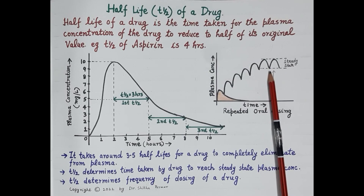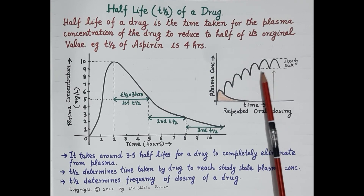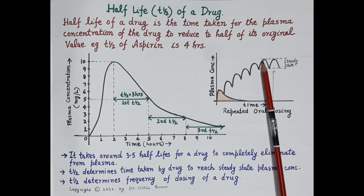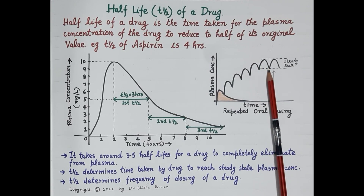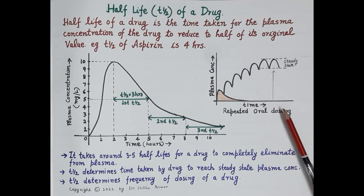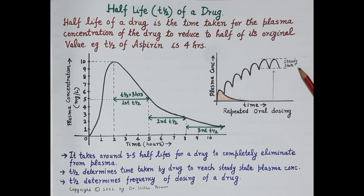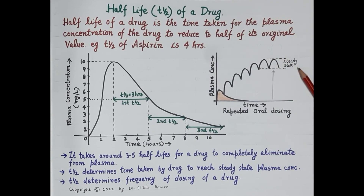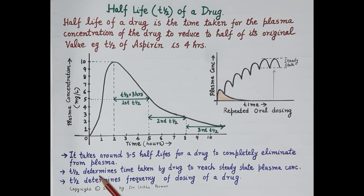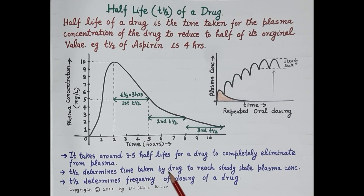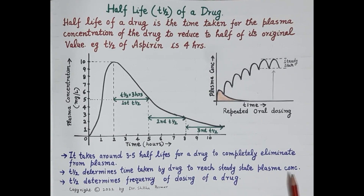Once this balance is made, the amount of drug entering the body becomes equal to the amount of drug being eliminated. The concentration of drug in the plasma becomes fixed, and it is termed as the steady state plasma concentration. So the half-life of a drug determines the time taken by the drug to reach the steady state plasma concentration.